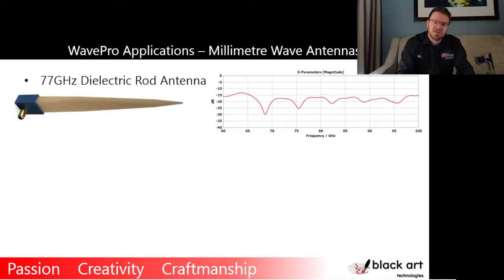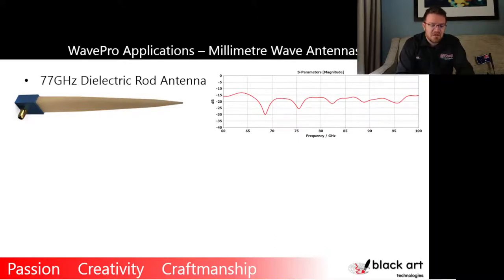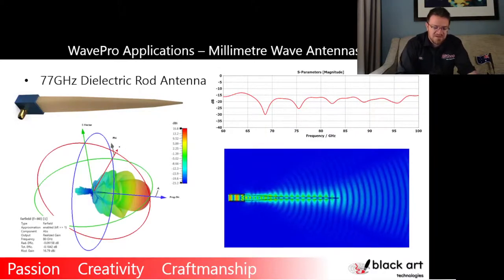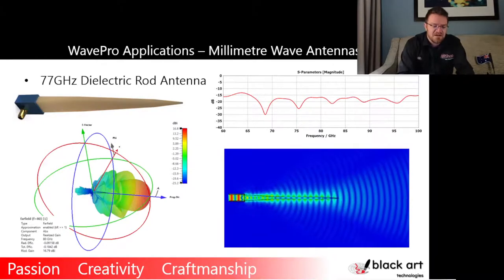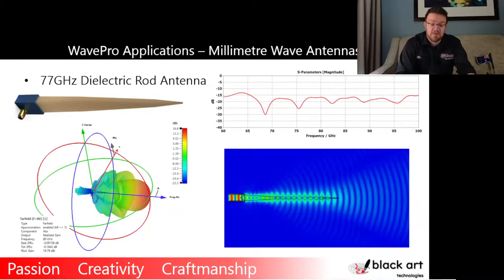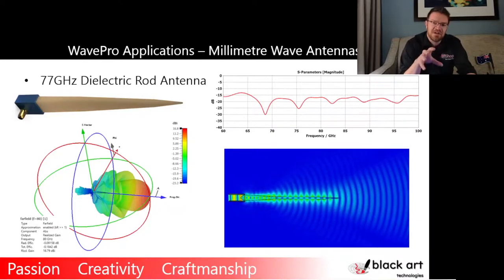Going into millimeter wave — obviously an interesting topic — a dielectric rod antenna is the example here. The bandwidth presented is from 60 GHz to 100 GHz — significant bandwidth — and the antenna radiation pattern is from 17.8 dBi. At 80 GHz, there's the field distribution you will get. This is a standard antenna, but imagine if you now have the variability of a DK — rather than choosing material X and accepting what you get, you can tweak it a little bit, and the losses will be quite manageable.